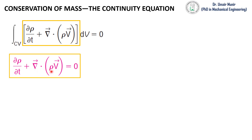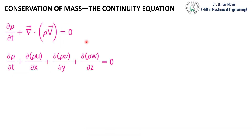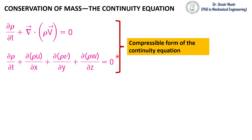This is the compact form of the continuity equation. If we expand it by replacing the del operator, we get the continuity equation in expanded form, where the first term is the rate of change of density and the other three terms are the rates of change of x-velocity, y-velocity, and z-velocity with respect to x, y, and z. This is the compressible form of the continuity equation, applicable to both compressible and incompressible flows.